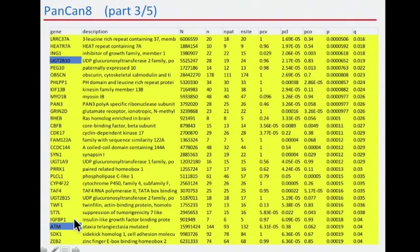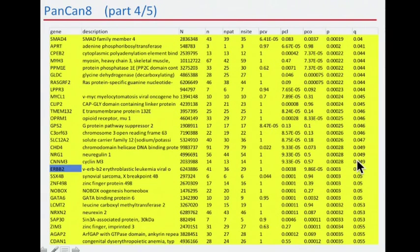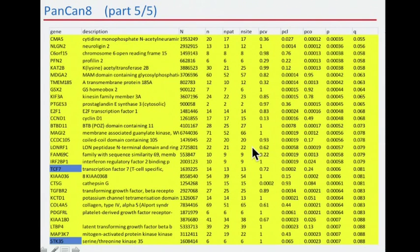ATM is a famous tumor suppressor gene, found significant in CLL in the New England Journal paper alongside SF3B1, but it was not significant in any of the tumor types we analyzed here. ERB-2 is also significant in the pan-cancer list. We also see transcription factors like E2F1, which is very well-clustered and conserved, and TCF7 and STK3, a serine-threonine kinase that is not very recurrent but is well-clustered and conserved.